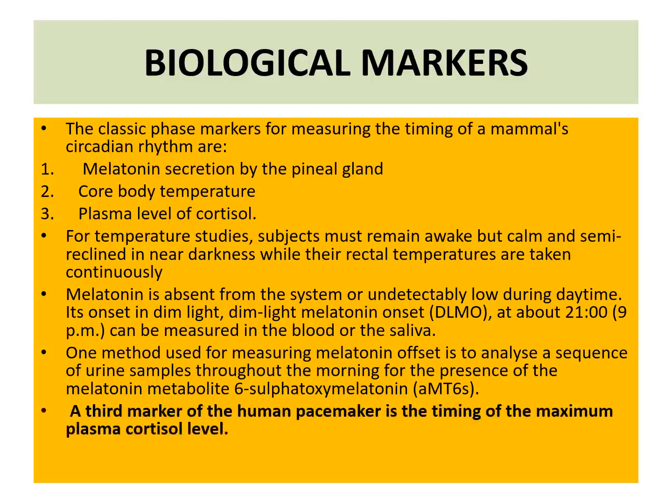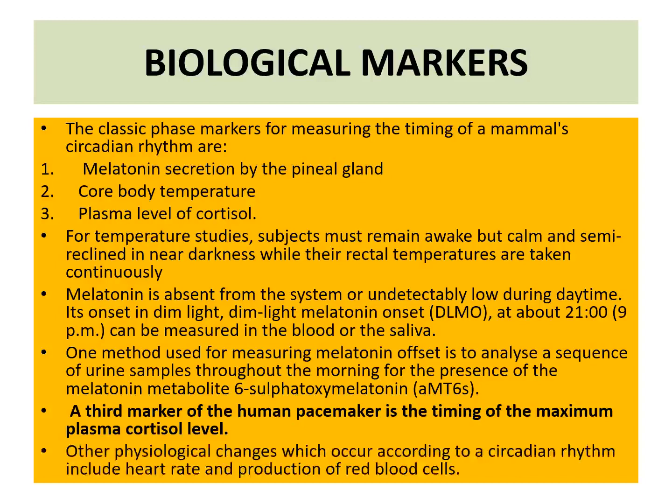The third marker of human circadian rhythm is the timing of maximum plasma cortisol level. So these are the three markers: melatonin, core body temperature, and plasma level of cortisol.